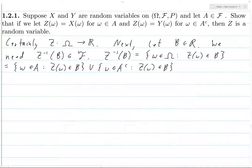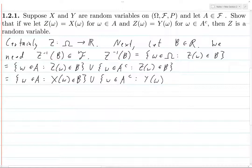Okay, but if omega is in A, then we know what Z of omega is. It's equal to X of omega. So this is just omega in A such that X of omega is in B union all omega which is in A complement such that Y of omega is in B.